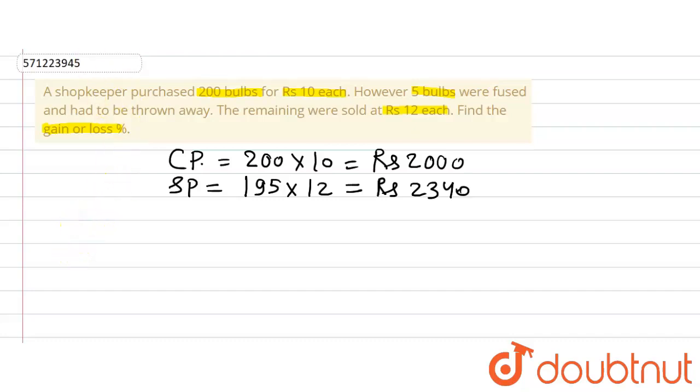So the gain percent, or the formula for gain percent, is SP minus CP divided by CP multiplied by 100.